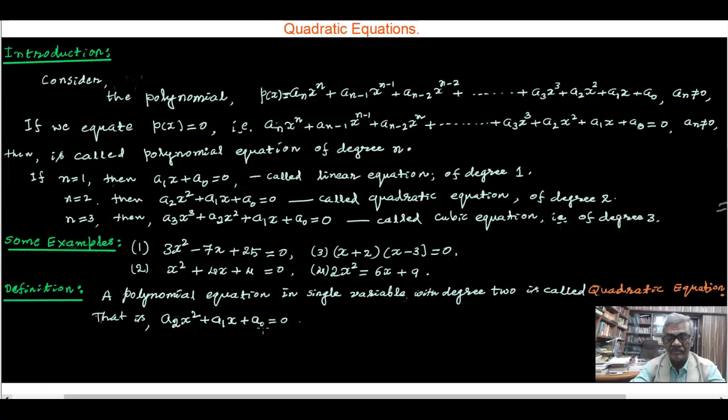And for that is a_2 x^2 + a_1 x + a_0 = 0. Thus the equation ax^2 + bx + c = 0 is called the standard form of a quadratic equation.